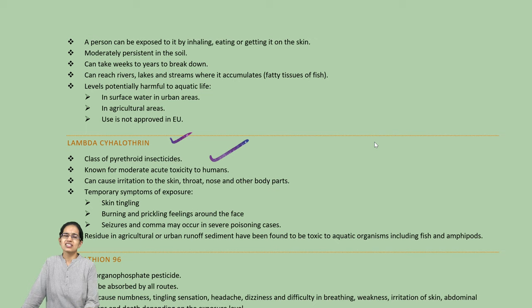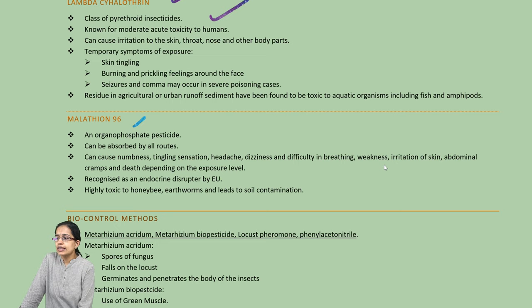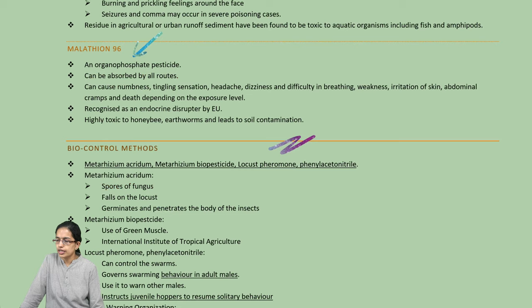The next is malathion, which is a recognized insecticide and pesticide, but it is highly toxic to earthworms and honeybees and leads to soil contamination. It can be absorbed through all routes in human beings and is again a derivative organophosphate.